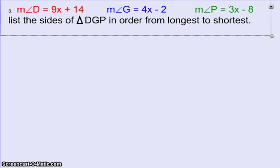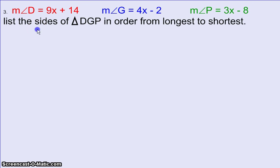So let's be careful and make sure that we understand what's going on and we answer the question correctly. It says to list the sides of triangle DGP in order from the longest to the shortest. But that's interesting. It's asking us about sides, yet it gives us information about angles. It says angle D is 9x plus 14, angle G is 4x minus 2, and angle P is 3x minus 8.